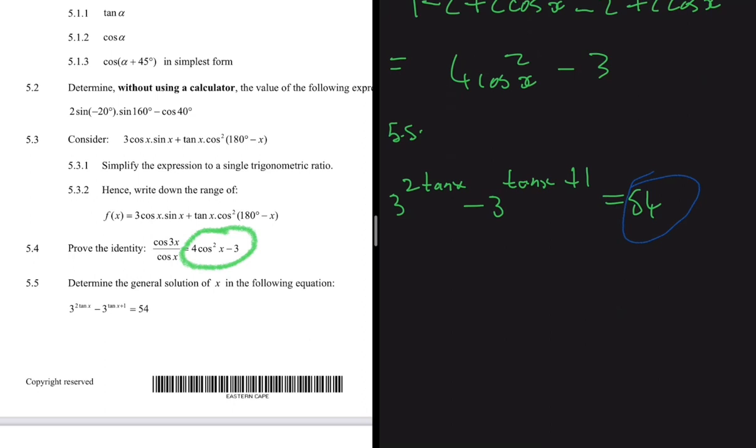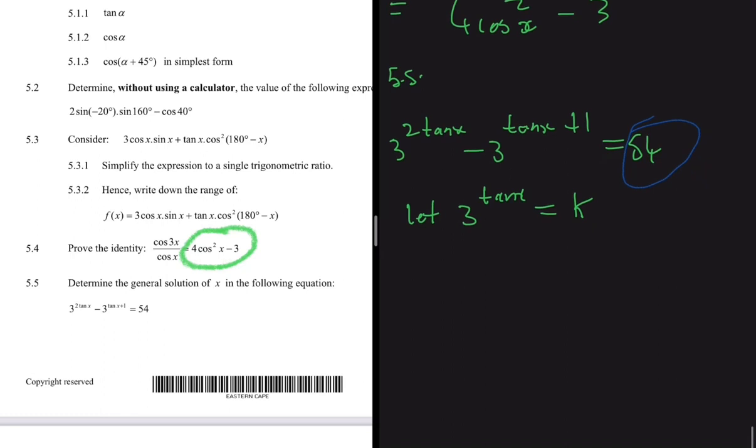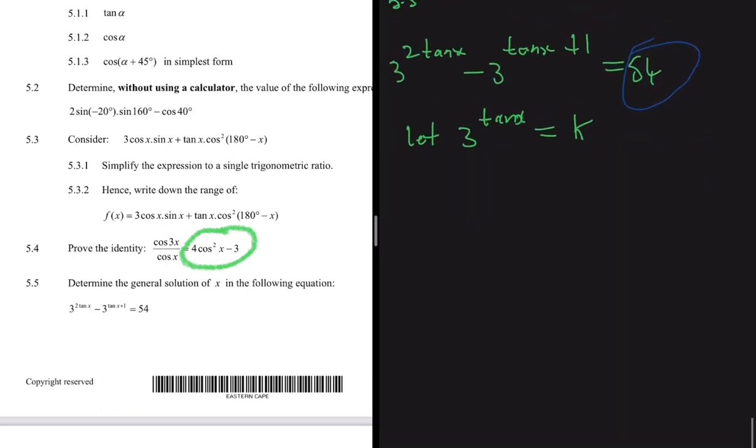Let 3^(tanX) = K, because 3^(tanX) is just a lot to process but K is simple and straightforward. If we do that, we're gonna get K² in place of 3^(2tanX). You can work that out and see if it makes sense.